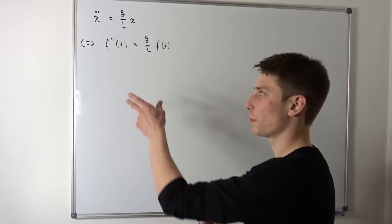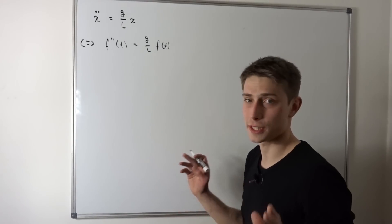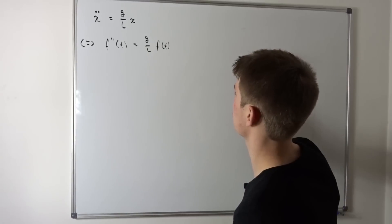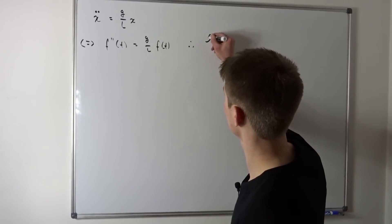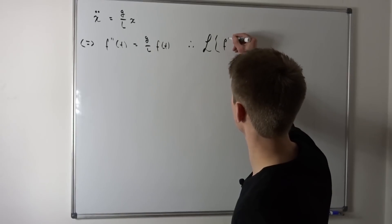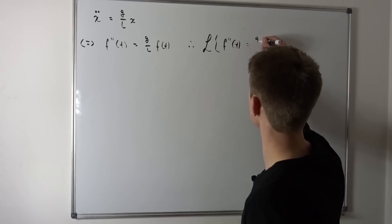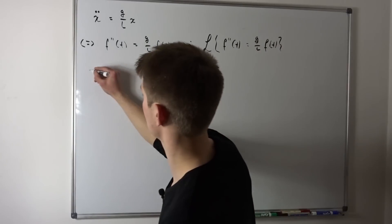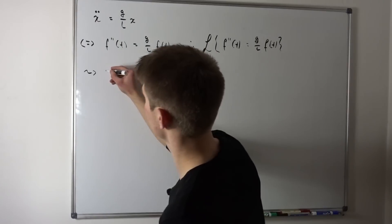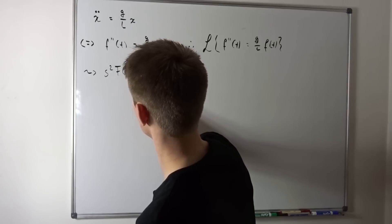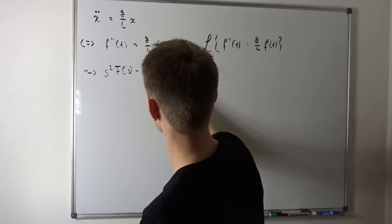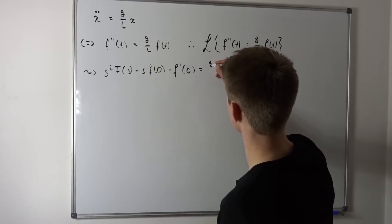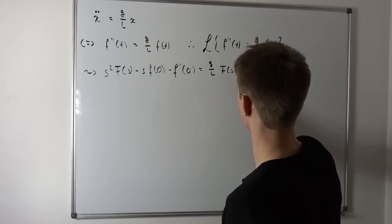If you don't know any of the Laplace transform identities, take a look in the description — there will be links to the corresponding videos. And now we want to apply the Laplace transform to this thing. So that means the Laplace transform of f''(t) = (g/l) · f(t). We just use all the identities we've gathered before. So this is s² · F(s) − s·f(0) − f'(0), and this is now equal to (g/l) · F(s).